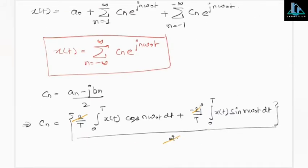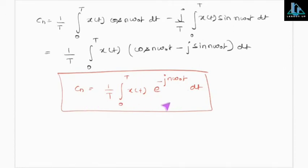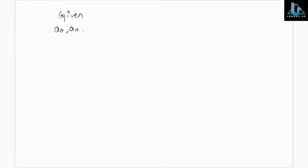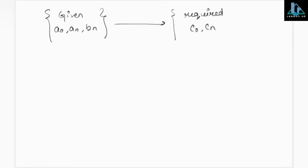So this is the form of x(t) and the coefficient cₙ. If you need to find c₀, put n=0 in the formula, and e^0 = 1, so c₀ = (1/T)∫₀ᵀ x(t)dt, which is the same as a₀. So in trigonometric Fourier series, if you know a₀, aₙ, and bₙ, then c₀ = a₀, cₙ = (aₙ - jbₙ)/2, and c₋ₙ (or cₙ conjugate) = (aₙ + jbₙ)/2.